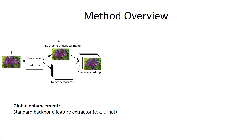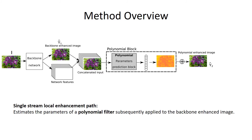First, our method performs a global image enhancement using a backbone network such as UNet, and retains the features for further processing. Then, in a single stream, we estimate and apply the brush filter using a parametric polynomial equation.